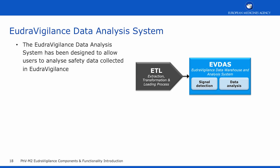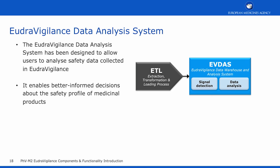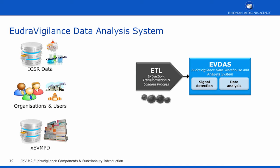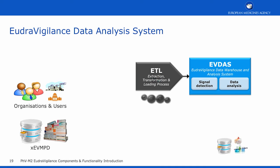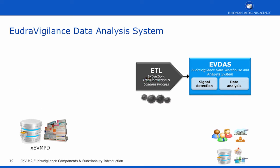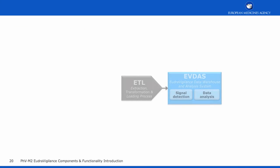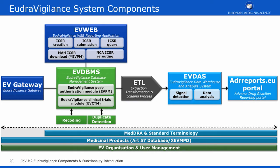The EudraVigilance data analysis system, EVDAS, has been designed to allow users to analyse safety data collected in EudraVigilance, enabling better informed decisions about the safety profile of medicinal products. EVDAS provides a range of analytical tools such as measuring reporting compliance for regulatory purposes and performing pharmacovigilance analysis such as signal detection. The extraction, transformation, and loading process (ETL) takes data from source transactional databases and processes it so that missing information that can be calculated from the underlying data is included in EVDAS. An example is calculating missing patient age and age groups from the reported date of birth of the patient in the ICSR; without this calculation, stratifying the data using this field would not be possible.